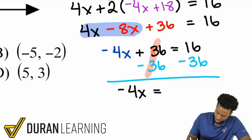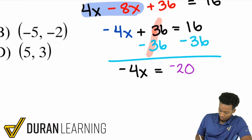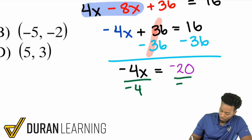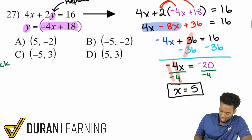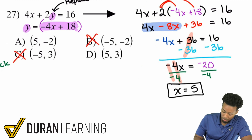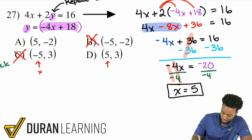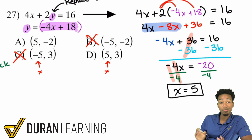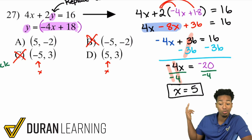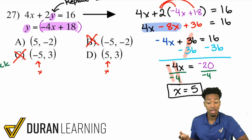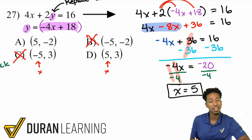Dividing both sides by negative 4, the negatives cancel, giving us X equals positive 5. Looking at the answer choices, B and C have different X values, so the answer must be A or D — both of which include X equals 5. I still need to find Y, so I'll plug X back in to determine which one is correct.